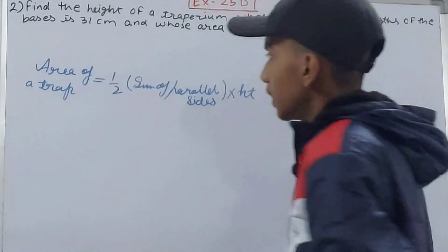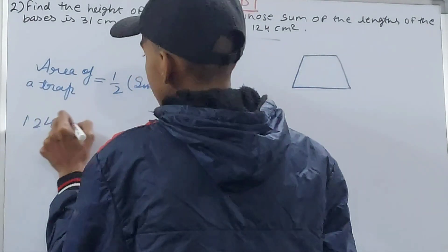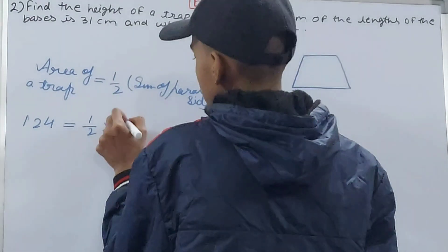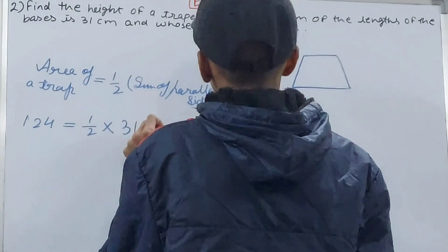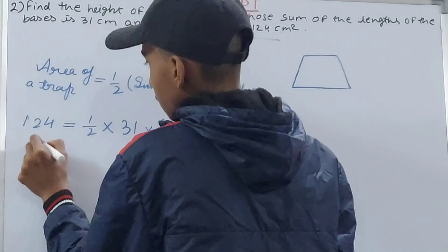This will give us the area. See, area of the trapezium, 124, equals 1/2 times the sum of parallel sides, which is 31, times height. The height is not known, so we will keep this as ht. 124